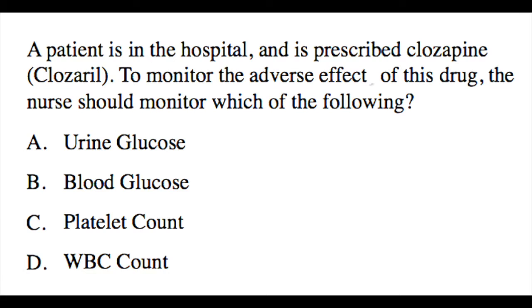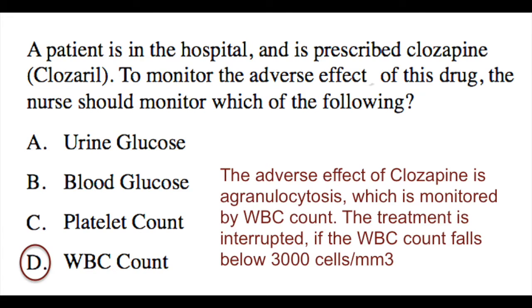The correct answer is D — white blood cell count, or WBC count. A side effect of clozapine is agranulocytosis, which is monitored by reviewing the results of the white blood cell count. Treatment is interrupted if the white blood cell count decreases to less than 3,000 cells per cubic millimeter. Agranulocytosis could be fatal if undetected and untreated.